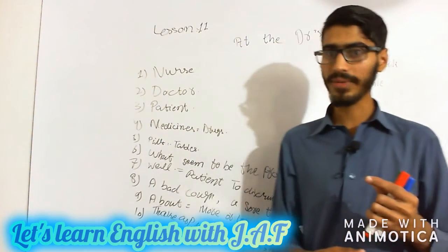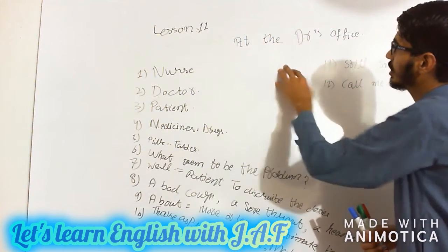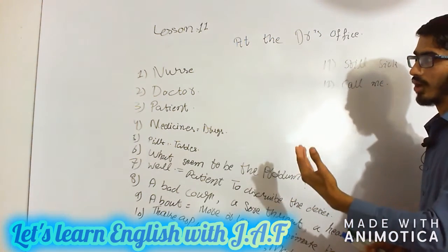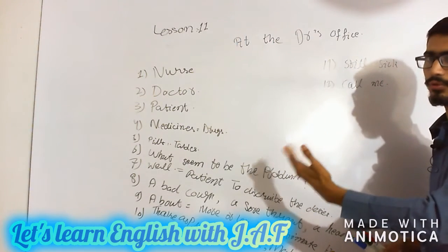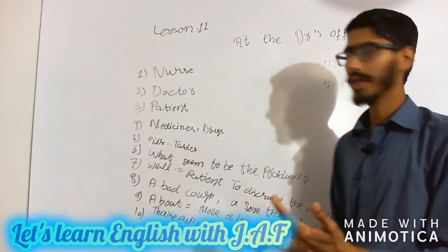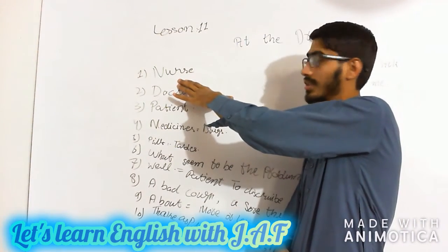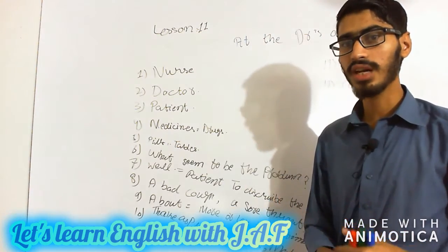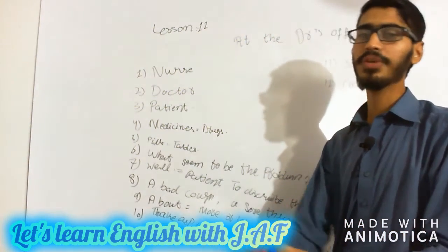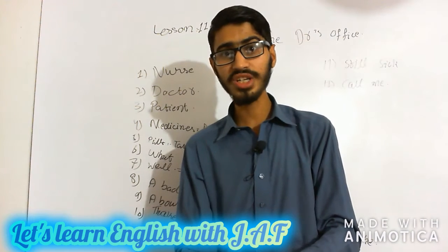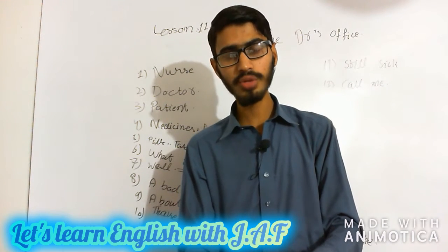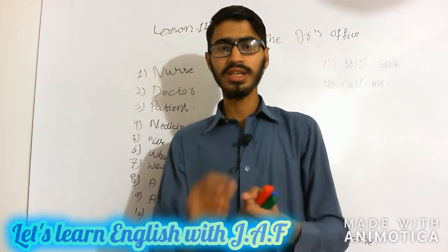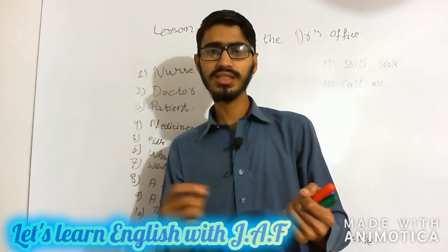So let's begin today's topic, which is about the doctor's office. For example, you are in the hospital or the doctor's office and you have an appointment. The first person we meet in the hospital is a nurse. A nurse is the doctor's helper. The one who helps the doctor — getting the patient's blood pressure, body temperature using a thermometer — these all are checked by the nurse, and they also keep some details of the patient.